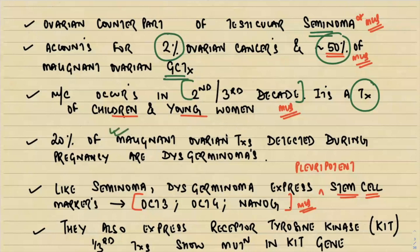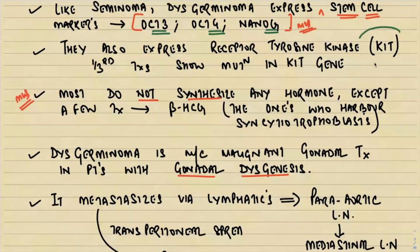Twenty percent of all malignant ovarian tumors detected during pregnancy are dysgerminomas, indicating a high incidence during pregnancy. Just like seminoma, dysgerminoma expresses certain pluripotent stem cell markers — very important MCQ — which are OCT3, OCT4, and NANOG. They also express certain receptor tyrosine kinase, and one third of dysgerminomas show mutations in the KIT gene.